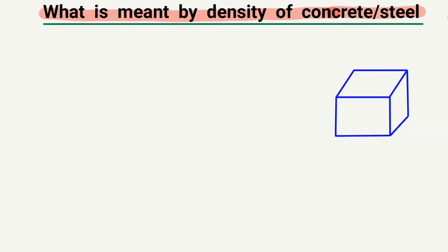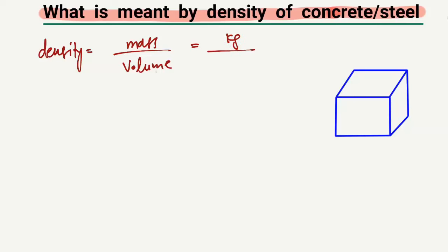I will explain this topic with the help of an example in order to understand it easily. Basically, density is equal to mass per unit volume. It is expressed in units of mass — always kilogram or gram — and volume, which is always cubic, for example cubic meter or gram per cubic centimeter. These two are the most commonly used units to express the density of any material.